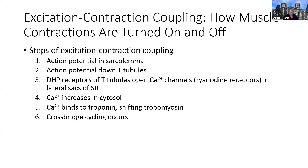Let's think about the steps, and then we'll look at an illustration. We begin with the action potential, which has to move down the T-tubules. The T-tubules are going to be associated with DHP receptors — dihydropyridine receptors — and these DHP receptors are also coupled to ryanodine receptors. Both of these structures allow for the action potential arriving via the T-tubules to result in calcium release from the SR. These two receptors are crucial in that action potential resulting in calcium release.